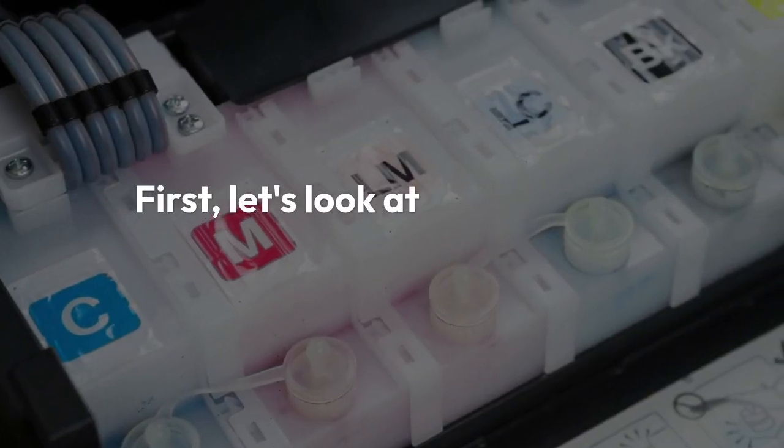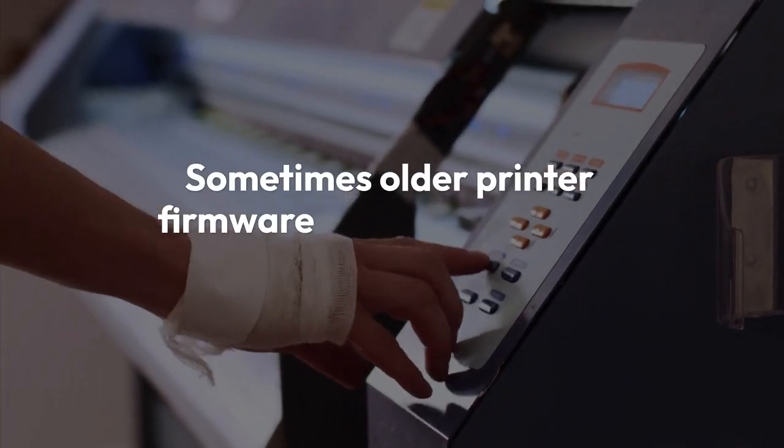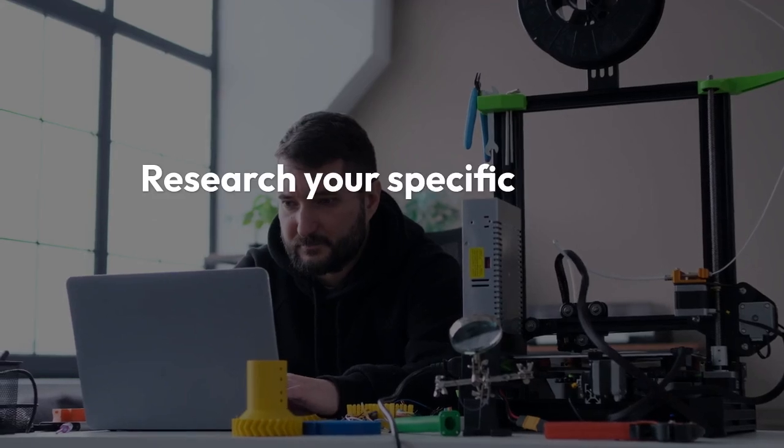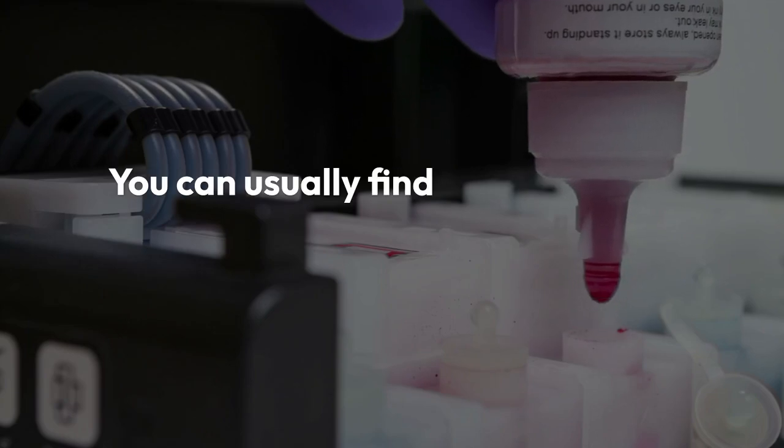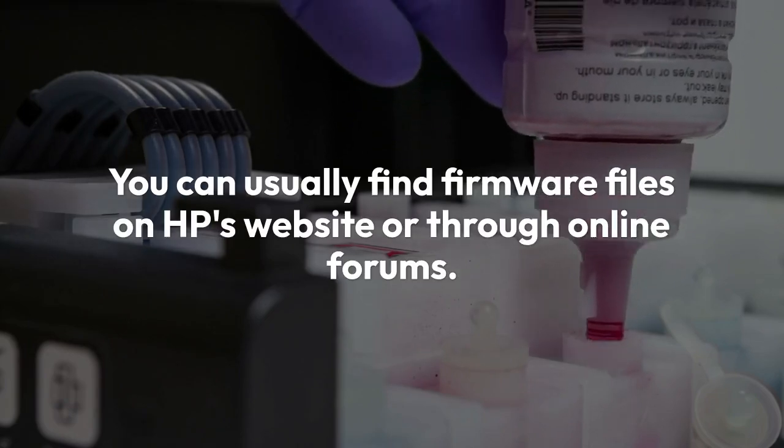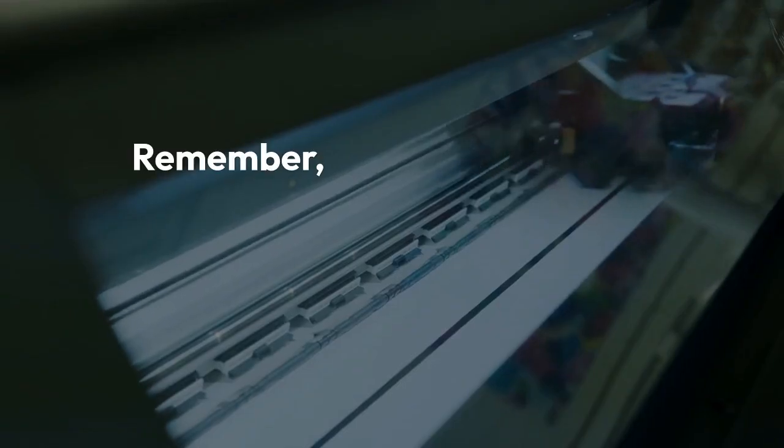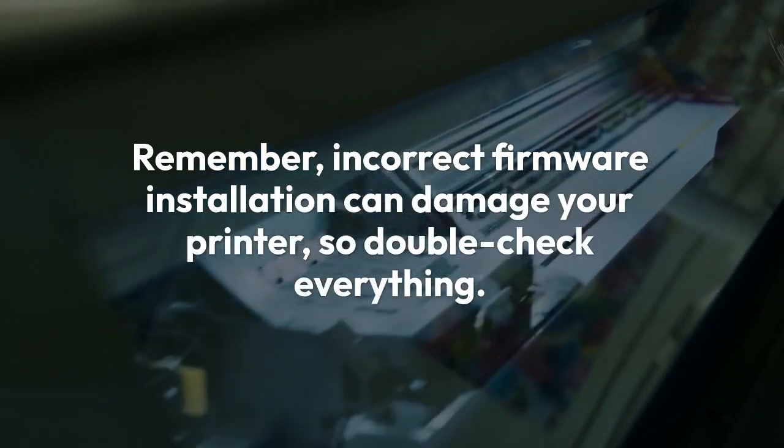First, let's look at the firmware downgrade approach. Sometimes older printer firmware versions are more lenient with cartridge usage. Research your specific printer model and see if downgrading is possible. You can usually find firmware files on HP's website or through online forums. Download the appropriate version and follow the instructions for installation. Remember, incorrect firmware installation can damage your printer, so double-check everything.